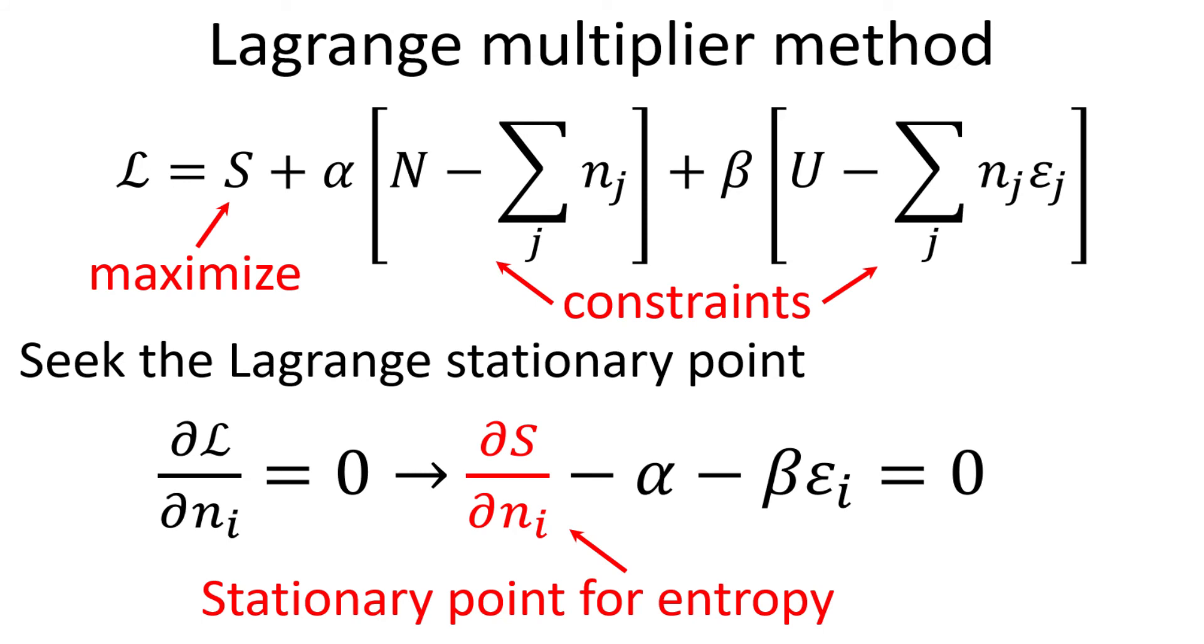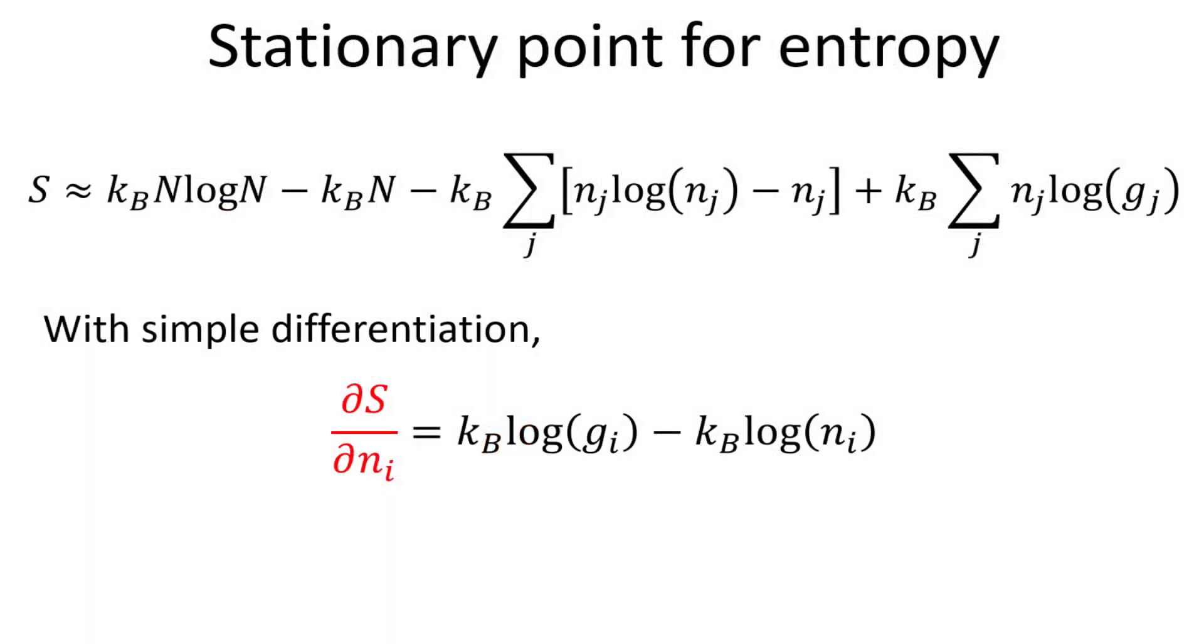To proceed, we first have to find the stationary point for the entropy S. Recall the entropy expression we derived earlier with Stirling approximation. We can work out the stationary point for the entropy by taking differentiation with respect to N sub i. The results are shown here, in terms of the degeneracy and the number of particles for each energy level.